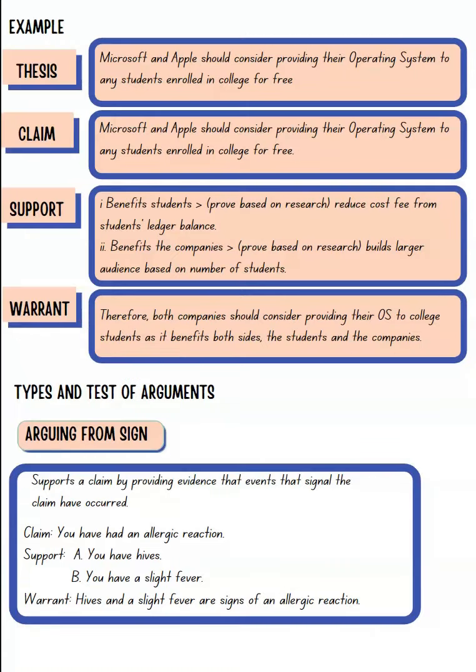Your thesis will always be your claim. For example, the claim here is: Microsoft and Apple should consider providing their operating system to students enrolled in college for free. Your support would answer why — you provide research on the benefits for students and the benefits for the companies. The warrant then links claim and support, stating that companies should consider providing the operating system because it benefits both students and the company.